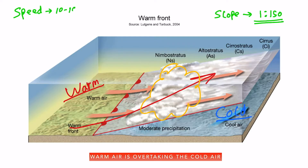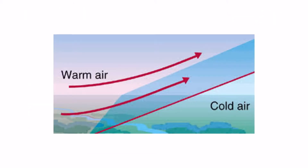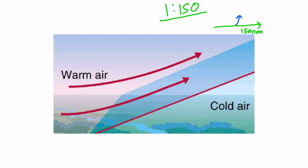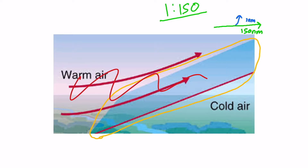A warm front's speed is around 10 to 15 knots. The slope of 1 to 150 means that for every 150 nautical miles the front covers horizontally, the air rises by 1 nautical mile — 150 nautical miles horizontally and 1 nautical mile vertically, which is quite a shallow slope. The warm front is the boundary between the warm air and the cold air.